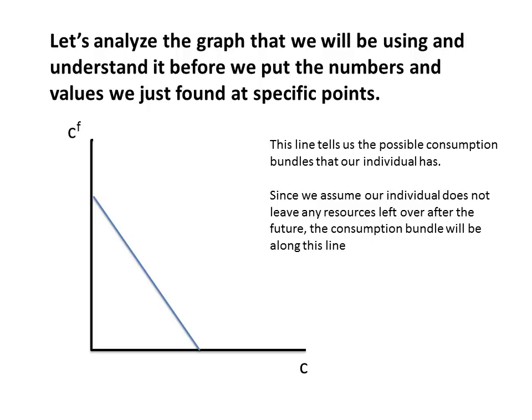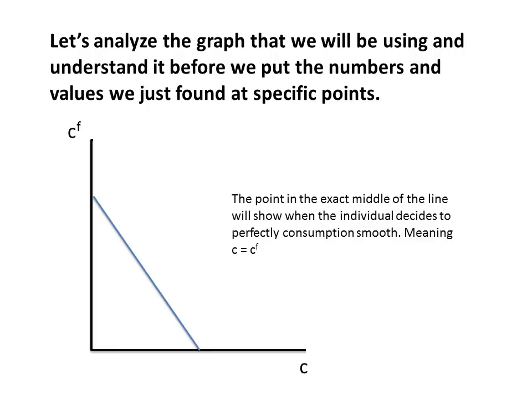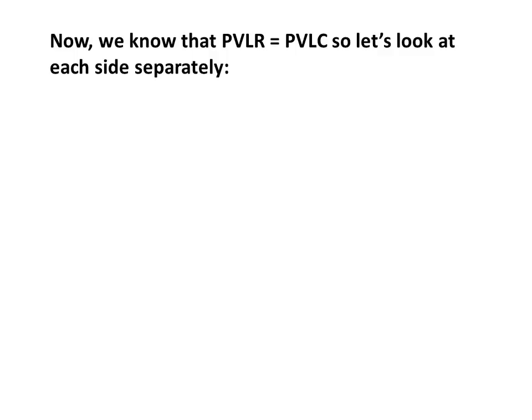This line tells us the possible consumption bundles the individual has. Since we assume the individual does not leave any resources left over after the future period, the consumption bundle is going to fall along this line. The intercepts are very interesting — they show us when the individual has decided to do all of their consumption in one period. The vertical intercept is the value if the individual consumes everything in the future and nothing in the current period. The horizontal intercept is when the individual consumes everything in the current period and nothing in the future. The point in the exact middle of this line at a 45-degree angle, where CF equals C, tells us the individual decides to perfectly consumption smooth — consuming the same amount in both periods.